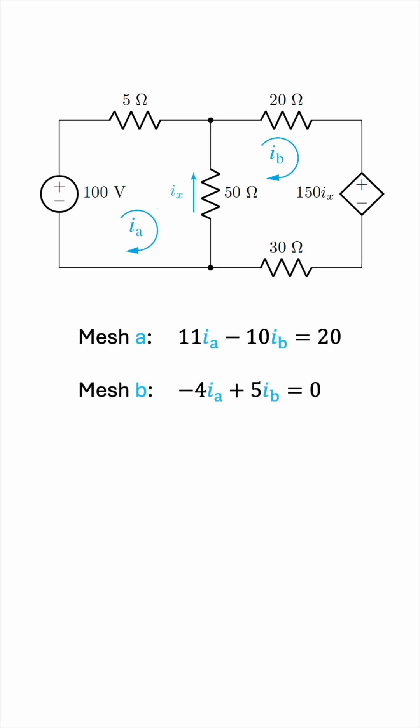An easy system of two equations with two unknowns, giving us Ia equals 20 over 3 amperes, and Ib equals 16 over 3 amperes.